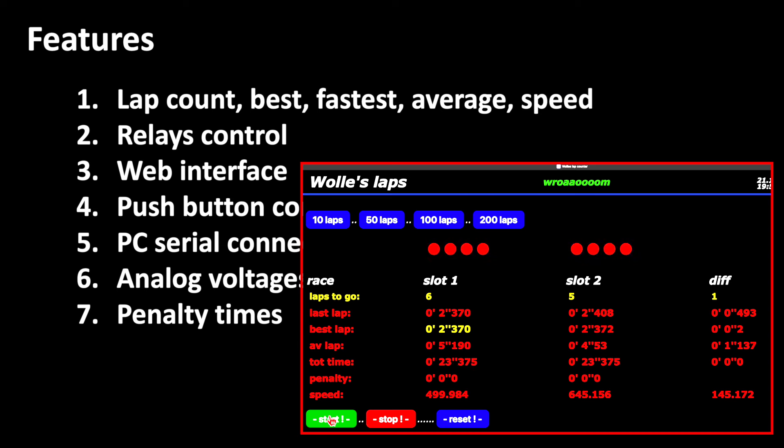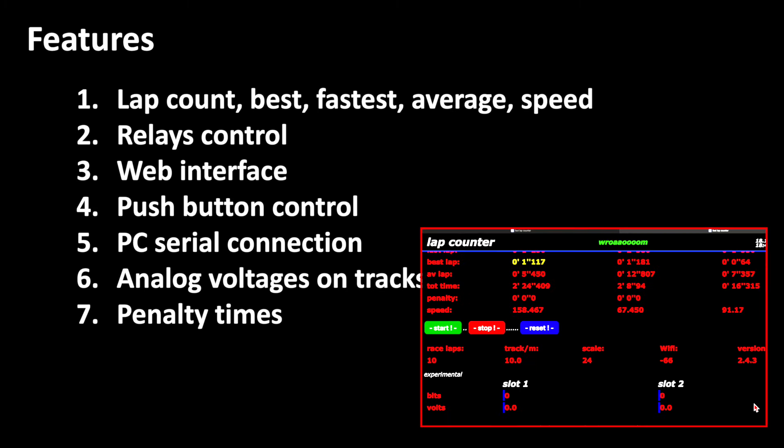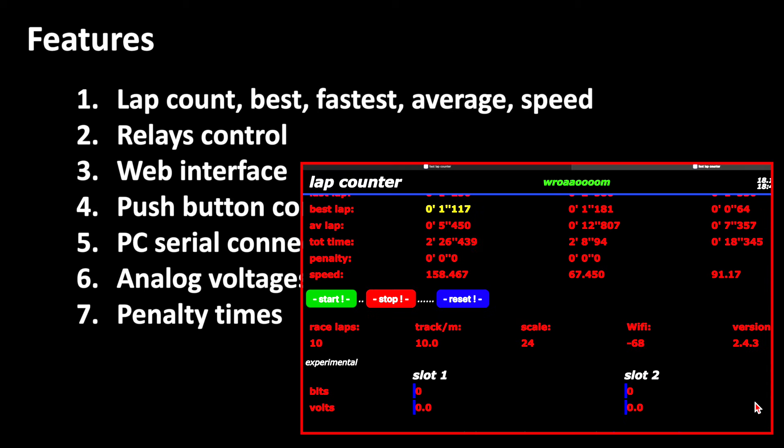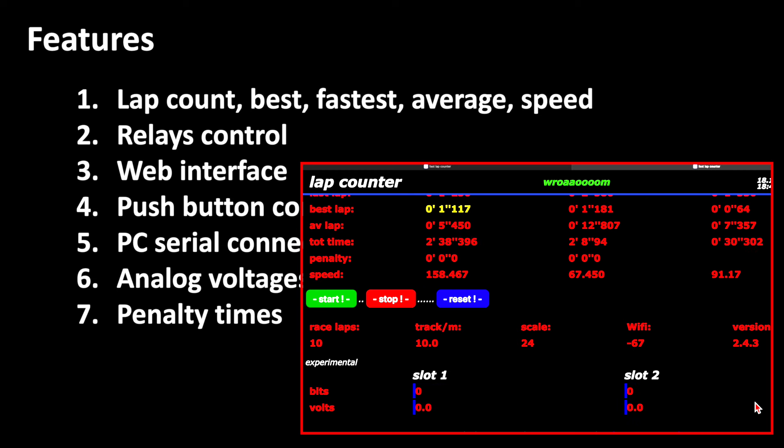The timers in the counter are on hold in the stop phase and continue running as soon as you press the start button. The lap counter has two analog voltage sensors that are measuring the voltage on the tracks which is displayed as dynamic bars on the browser interface. This impresses the spectators and allows you to check at any time whether the vehicle's power supply is working correctly.